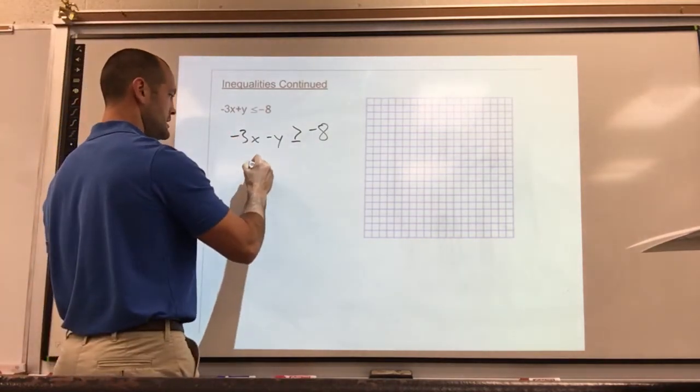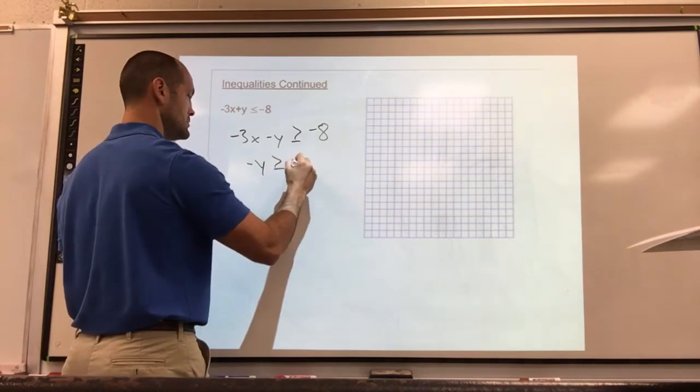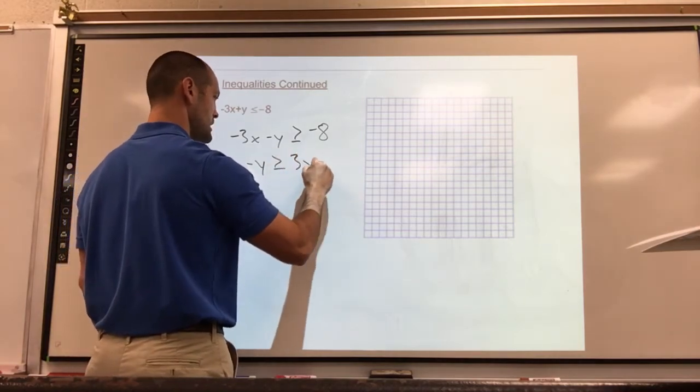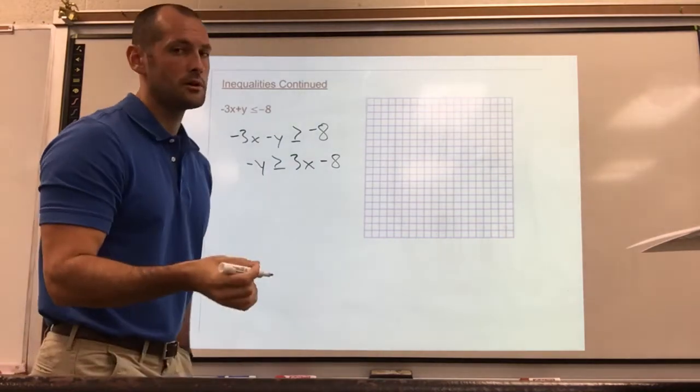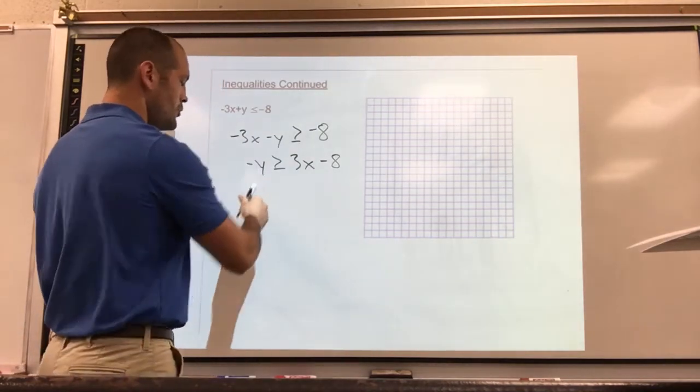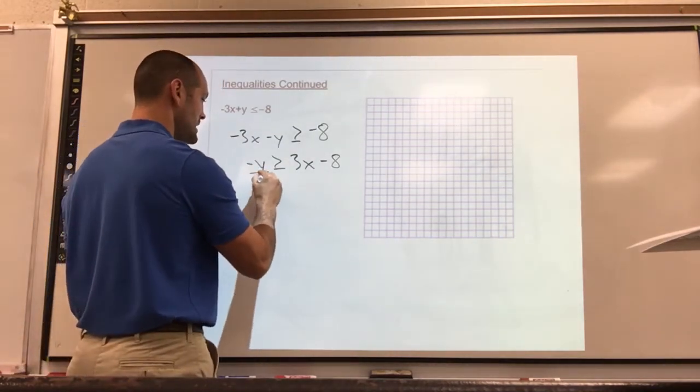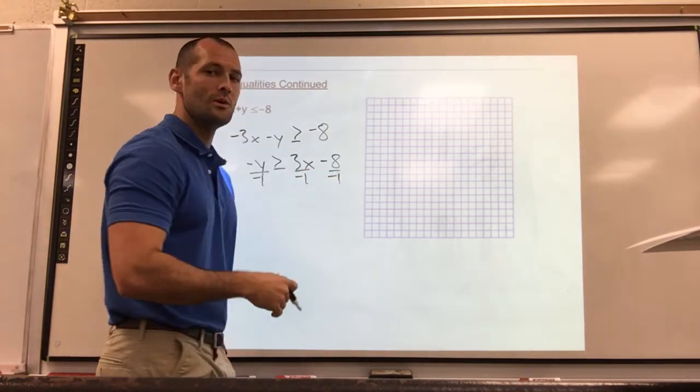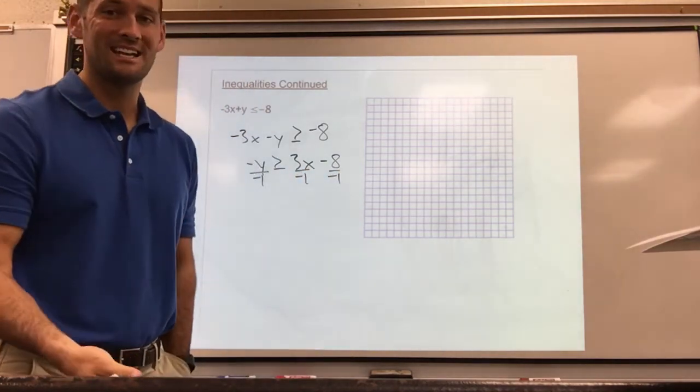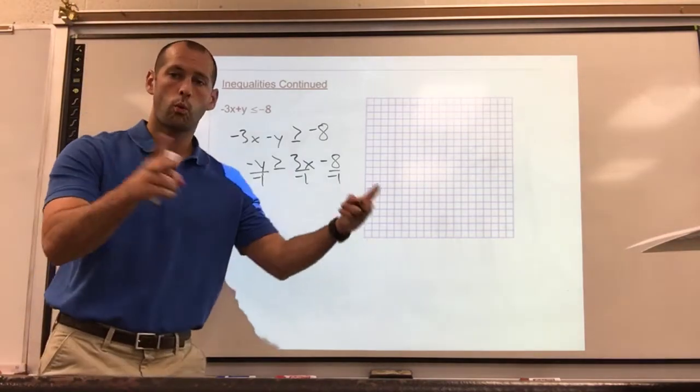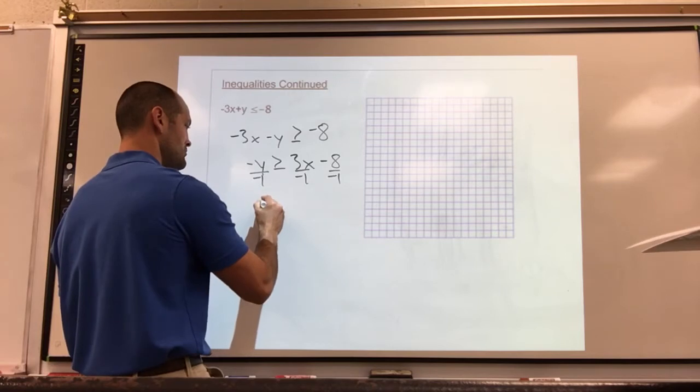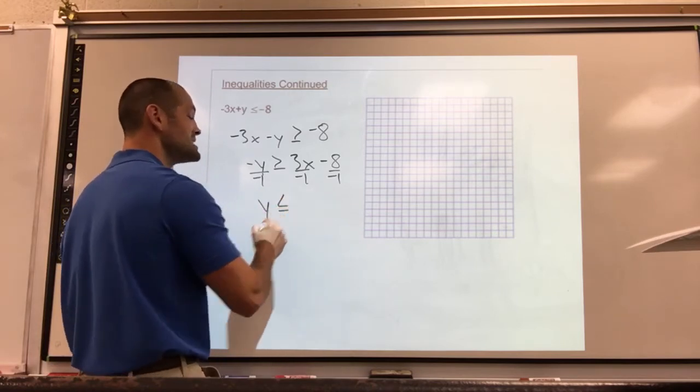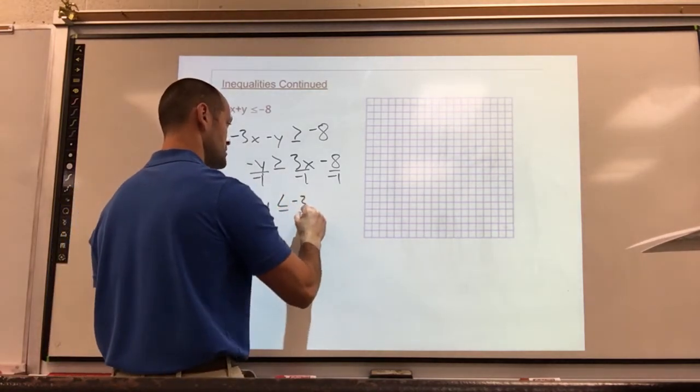Bring the x over, we get negative y greater than or equal to 3x minus 8. Now this is one of the inequality rules some of you forget. To get y alone, I'm going to divide by a negative 1. Don't sleep on this: when you multiply or divide by a negative, it ends up flipping the inequality. So I'll be left with y is less than or equal to negative 3x plus 8.